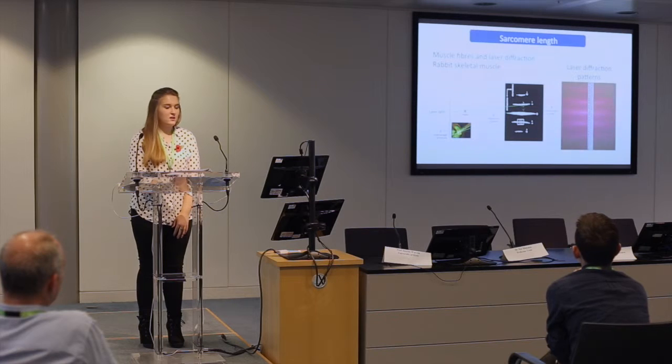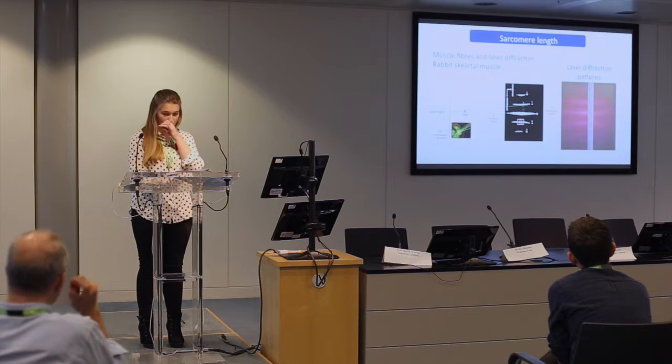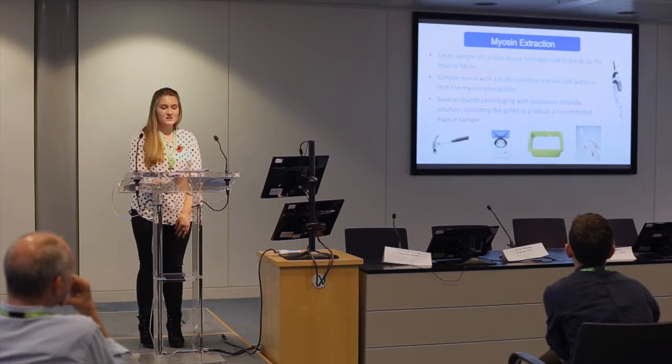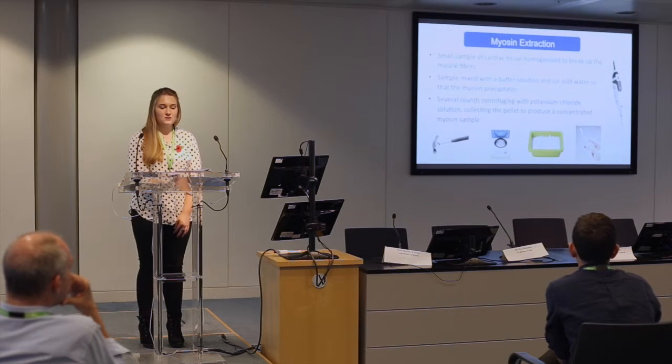We started the project about a year ago, initially looking at the muscle fibres and learning more about the muscle structure. We used laser diffraction methods to determine the sarcomere length. To identify the myosin isoforms present, we need to extract myosin from the cardiac tissue. We tried the myosin extraction protocol on porcine cardiac tissue. The muscle tissue is homogenised to break up the muscle fibres, and we looked at whether hammering the sample on ice blocks would be as effective as using a homogeniser. The sample is mixed with a buffer solution in ice-cold water, then myosin is precipitated out as a solid. The myosin sample undergoes several rounds of centrifugation with potassium chloride solution, collecting the pellet, resulting in a concentrated myosin sample.